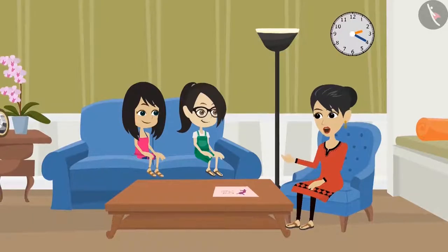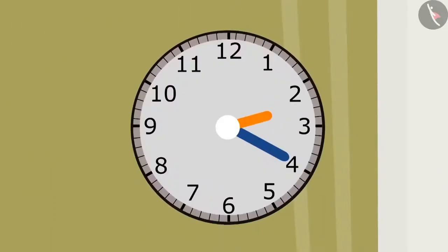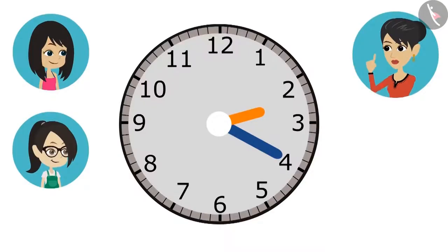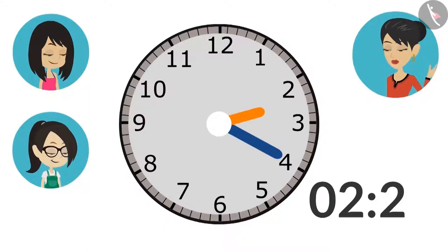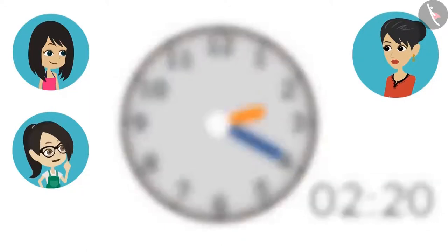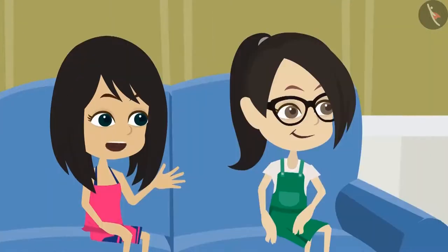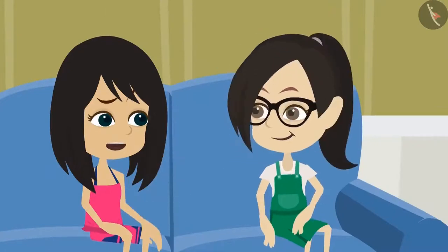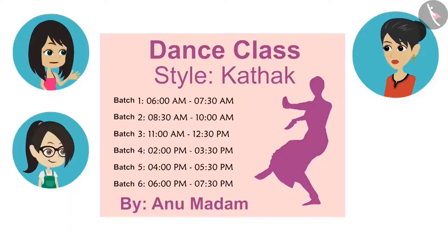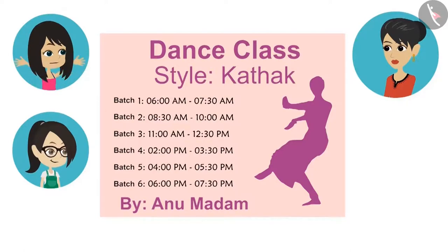See, it is 20 minutes past 2 o'clock on our house clock, so it will be written like this: 2 colon 20. This means that the first batch is from 6 o'clock to 30 minutes past 7 o'clock. Then why have they written this information twice? Where is it written twice? See — the same time is written in front of batch 1 and in front of batch 6: from 6:00 to 7:30.